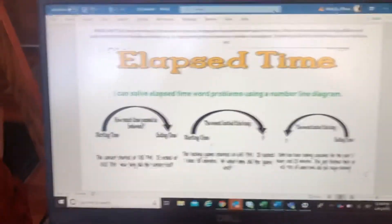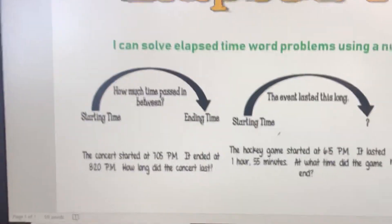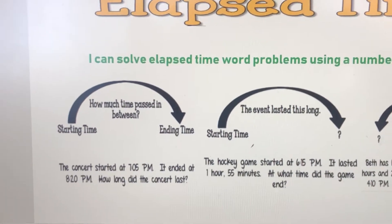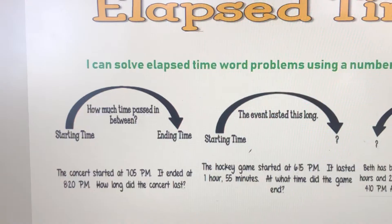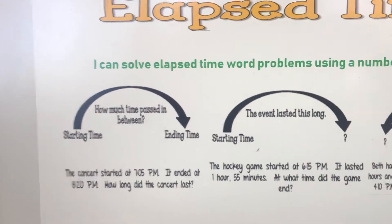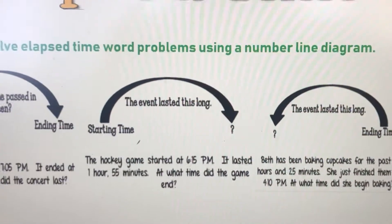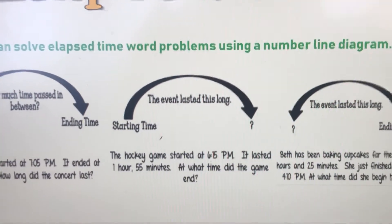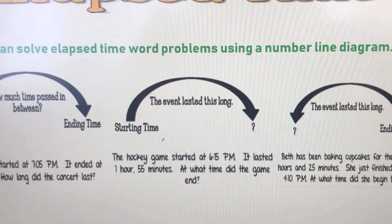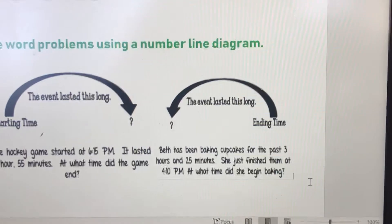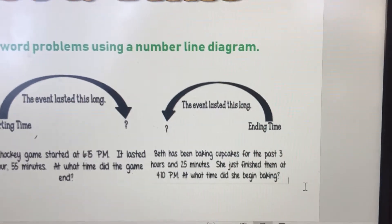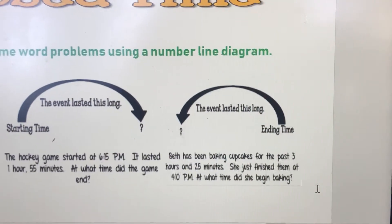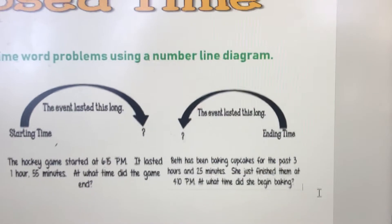You'll see I have three problems here. The first problem is a start and end time problem — I get my start time, I know my end time, and I have to figure out how much time has passed in between. My second problem type, my word problem might tell me a start time and how long the event lasted, and I have to figure out what time that event ended. And the third type of elapsed time problem — this one is the trickiest — they give me the end time and how long the event lasted, and I have to figure out what time the event began.